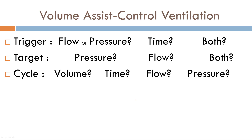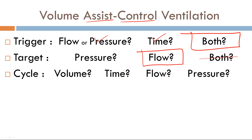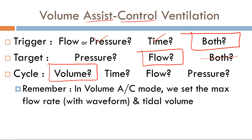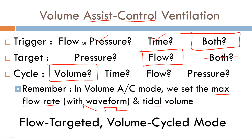Volume assist-control ventilation: the trigger is all in the name — it's an assist-control, hybrid mode. So the trigger will be flow or pressure for assisted breaths and time for controlled breaths; therefore the trigger variable is both. The target variable — you can only have one target — is flow, because in volume AC mode we set the flow. The cycle variable is volume: once 500 cc's is delivered, the breath stops. In volume AC we set the maximum flow rate, the waveform (decelerating ramp or square/constant), and the tidal volume.